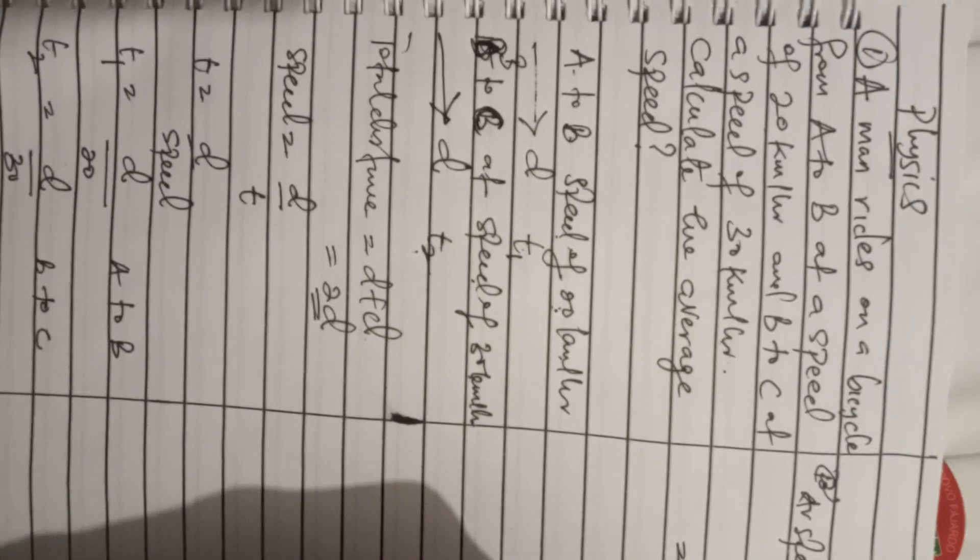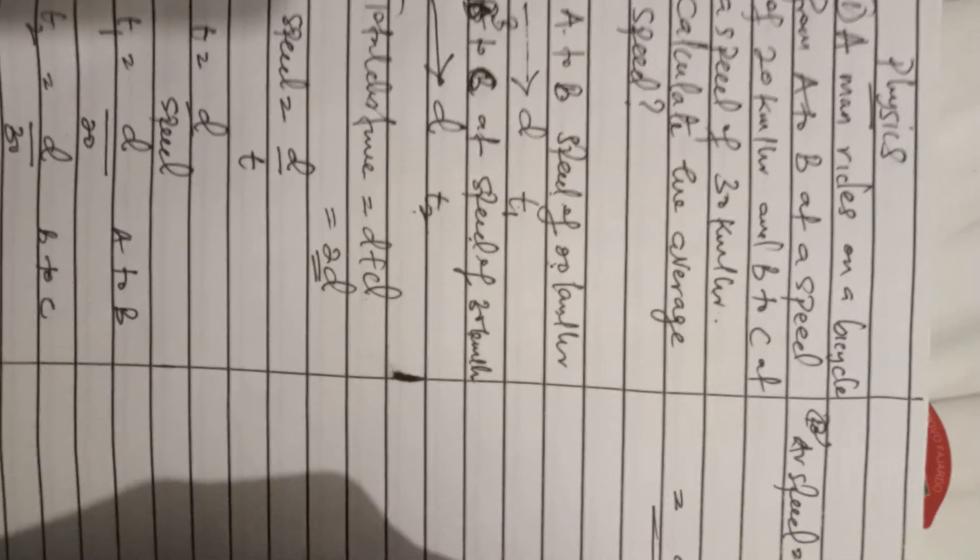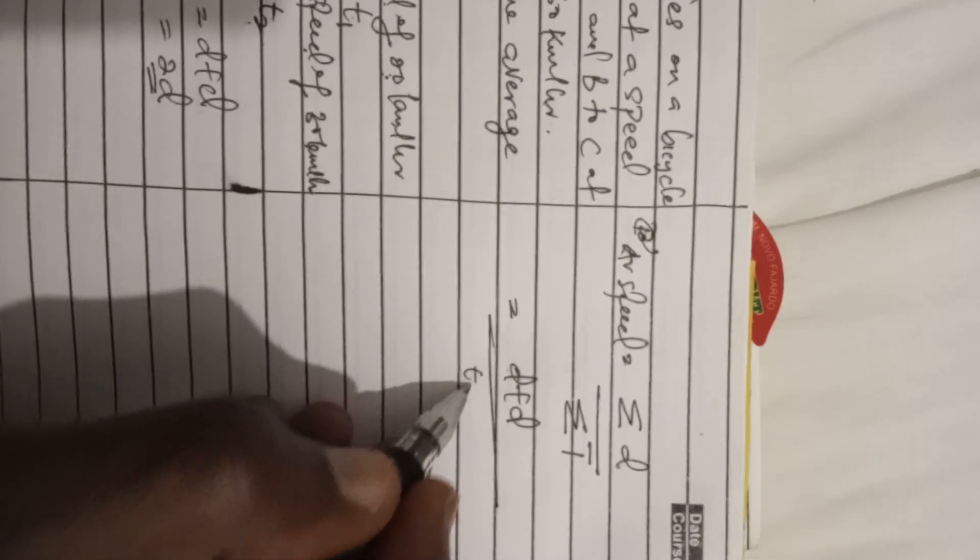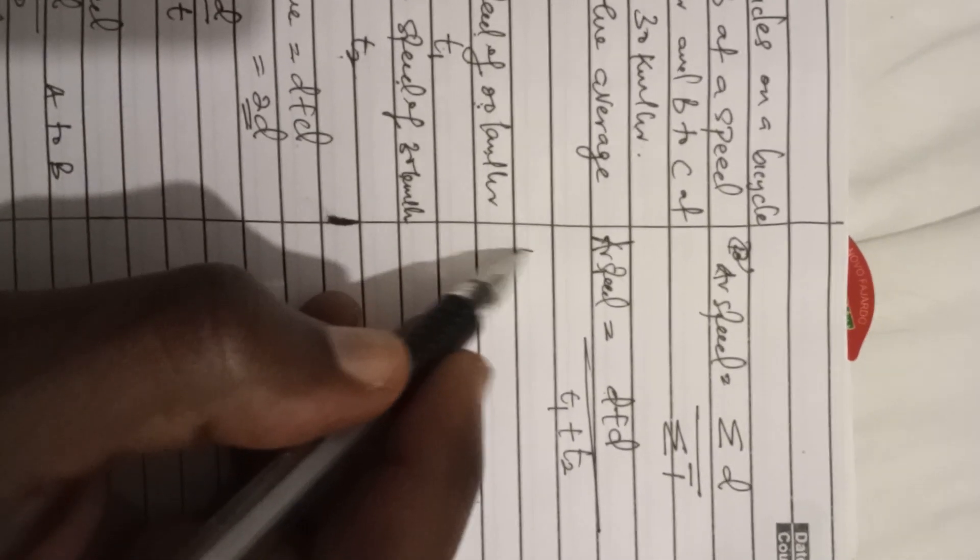Therefore, our average speed equals total distance over total time. The total distance is d plus d, which is 2d. The total time is t1 plus t2. So average speed equals 2d over (t1 plus t2), which is 2d over (d/20 plus d/30).